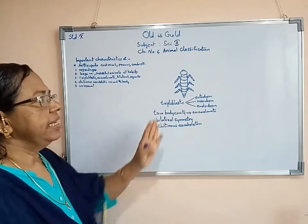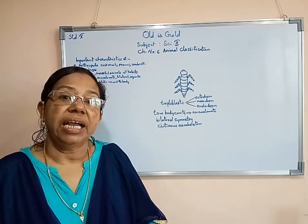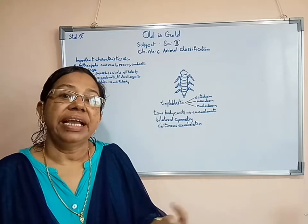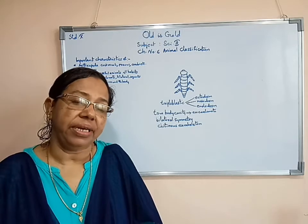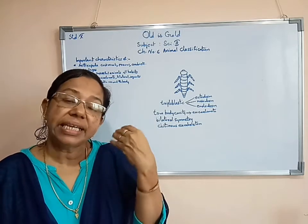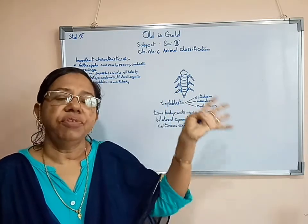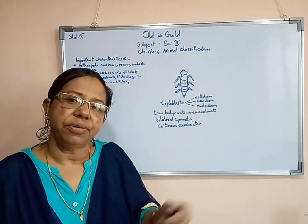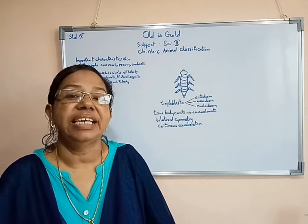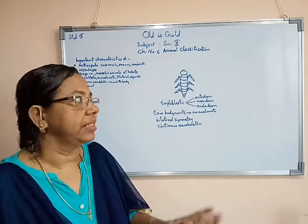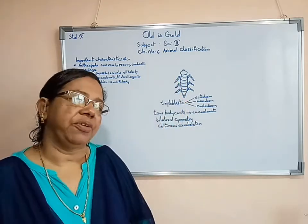One more thing: in case of Arthropoda, they are showing that the male organism is different and the female organism is different. So we can say that they are unisexual. Unisexual means female is separate and male is separate.